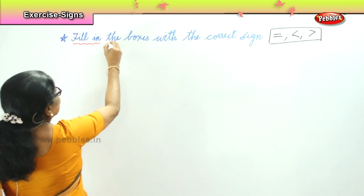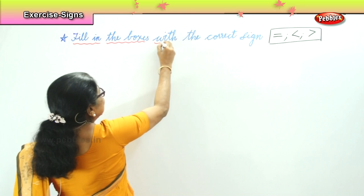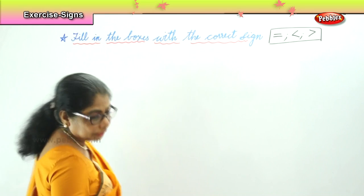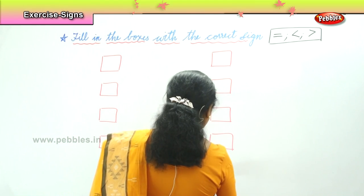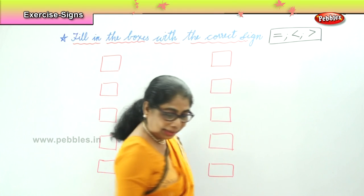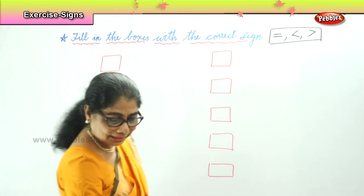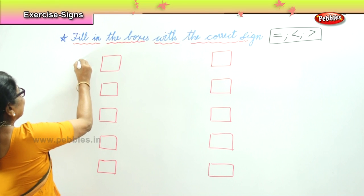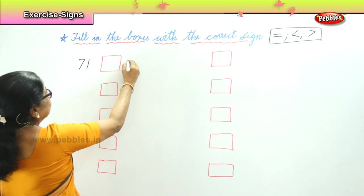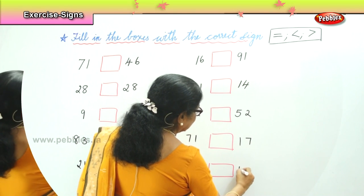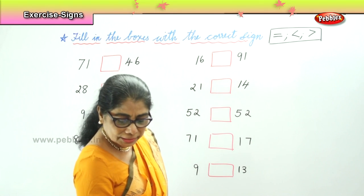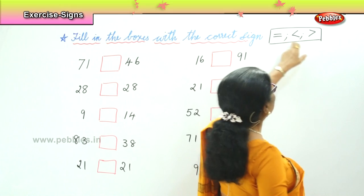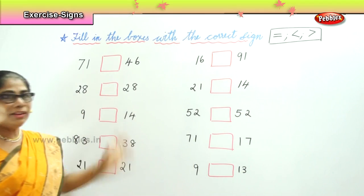Now I will give you numbers — I will put numbers so that you can think and fill in. I will put numbers at random and we will compare the numbers and see what sign goes in where. We are going to use the signs equal to, greater than, or less than in any of these boxes.